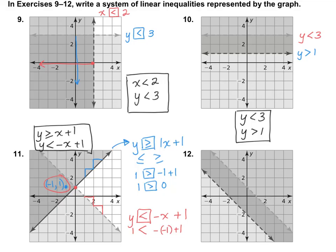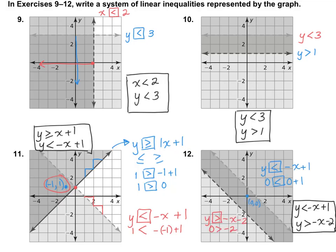I would like for you to try number 12 on your own. For number 12, I got y is less than negative x plus 1 for this line, and y is greater than negative x minus 2 for this line. If you did not get it correct, see if you can find your mistake. Okay, that's it — thanks for watching!